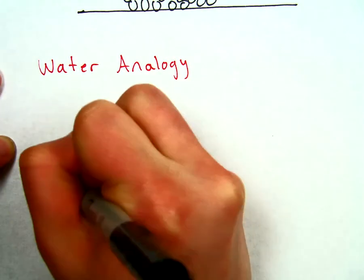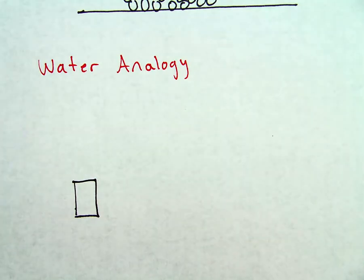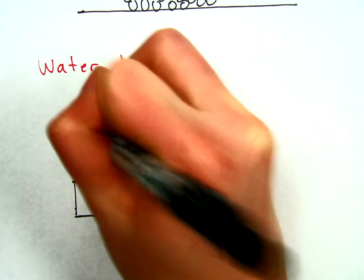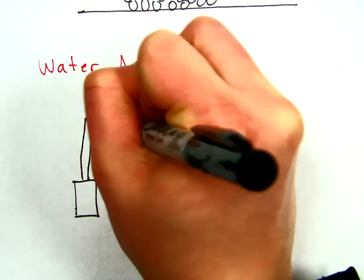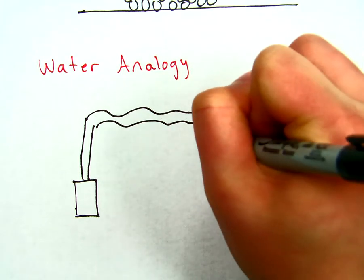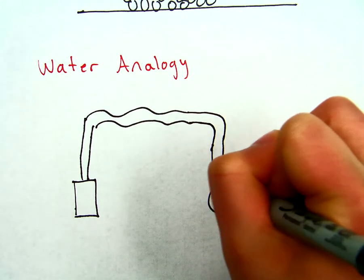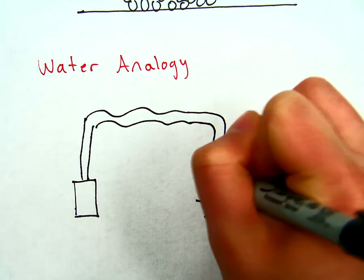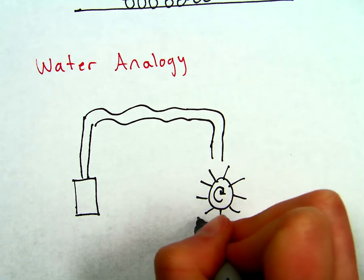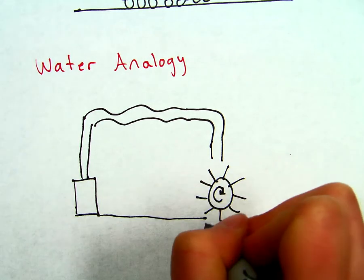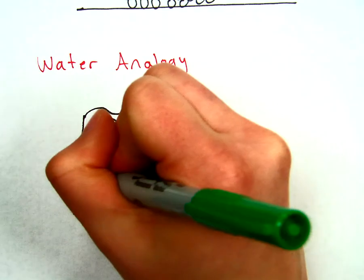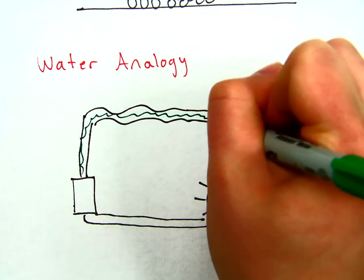So we're going to start off with a pump. And the whole job of this pump is to bring water up. And the point of bringing the water up is so we can bring it over and drop it down. And after we drop it down, it's going to turn a water wheel. After it turns the water wheel, the water is collected and brought back to the pump. So we started at the pump, we add some water, and we move throughout.